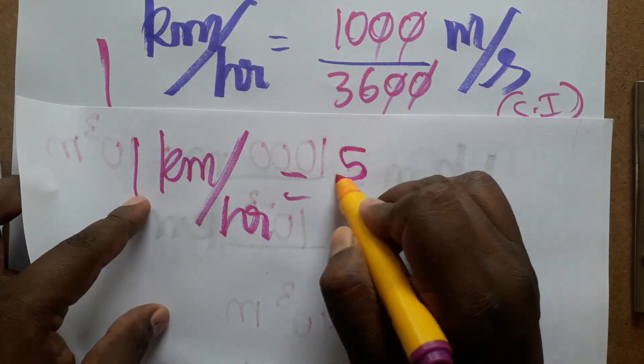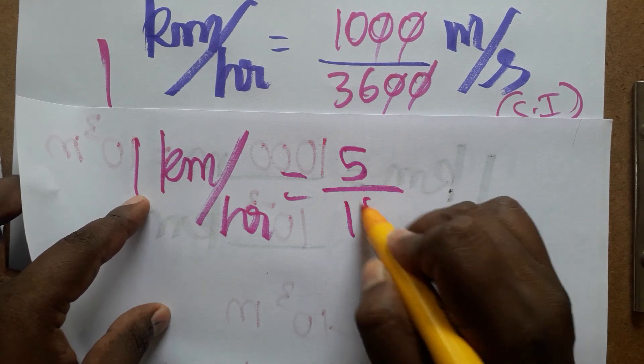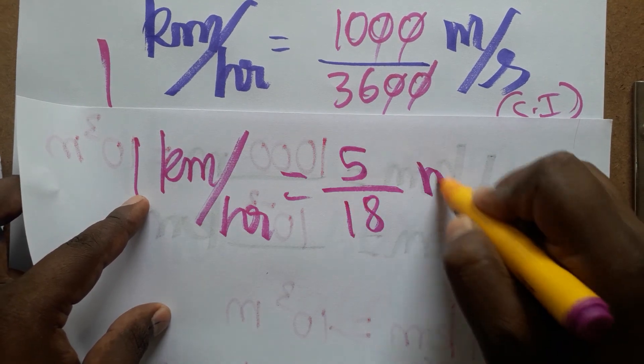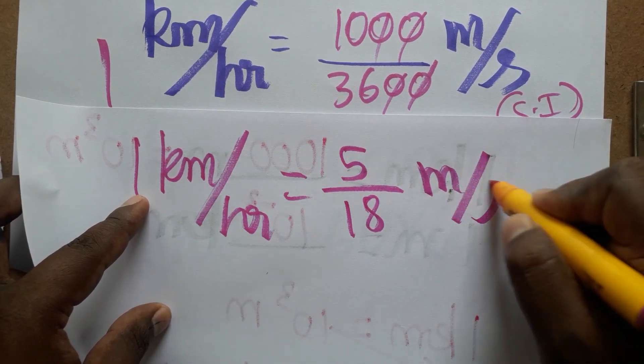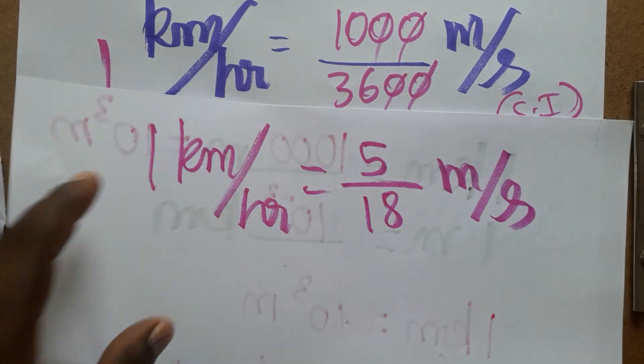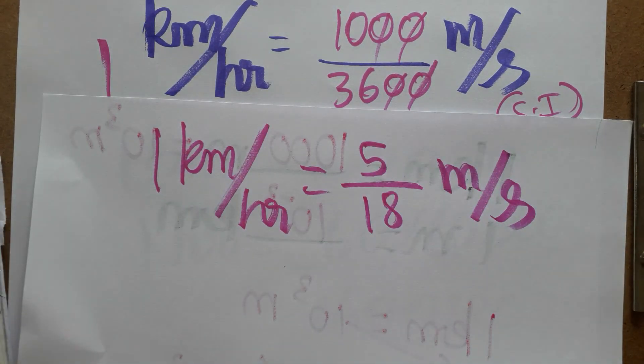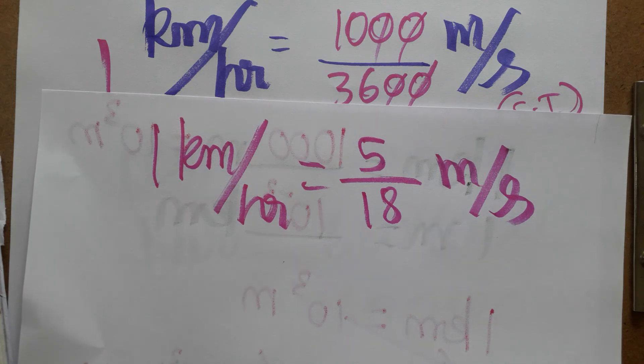So one kilometer per hour is equal to five divided by 18 meter per second. Thank you for watching my channel — if you like my channel, please subscribe.